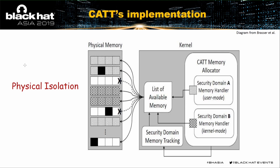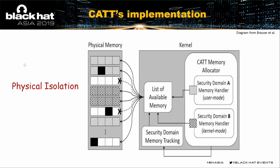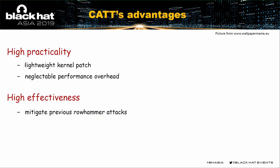Any bit-flips induced by an attacker will only occur in her own partition — the user partition — or in the guarding rows, making bit-flips useless. CAT is a software-only approach without hardware modifications and is practical to protect legacy systems. Furthermore, we can utilize CAT to build other fine-grained domain isolations, such as browser and sandbox isolation, privileged process and regular process isolation, and so on.